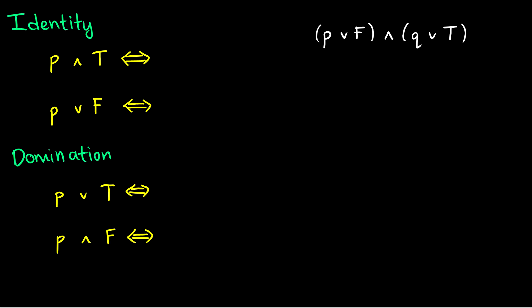The first laws I want to introduce are the identity laws. For most of the proofs you can check logical equivalence using a truth table, but I won't do the truth tables here. P∧T is logically equivalent to P — P∧T is true when both P is true and the tautology is true, and since the tautology is always true, this reduces to whenever P is true. P∨F is true when either P is true or F is true, but F is never true, so this is just the same as P. These are identity laws because given P, they output P again.